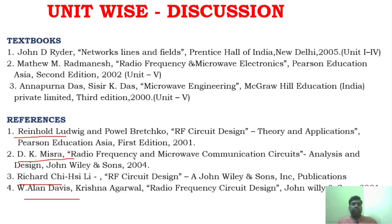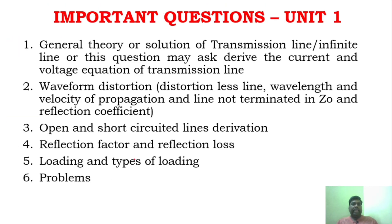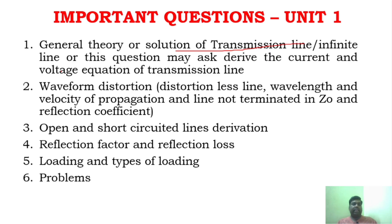So this is the unit-wise discussion and important question discussion. For Unit 1, I have given five important topics. In the general theory of transmission lines: first, derive the equation for voltage and current — this appears in 90% of question papers. Second, wave distortion — very important. Third, open and short circuit lines derivation — very important.